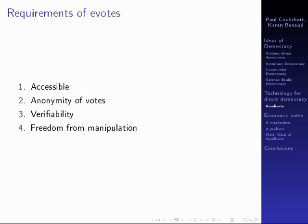Now, if you're going to have an electronic voting system, it must be accessible, it must be anonymous so no one knows how you voted, it must be verifiable, and it must be free from manipulation.